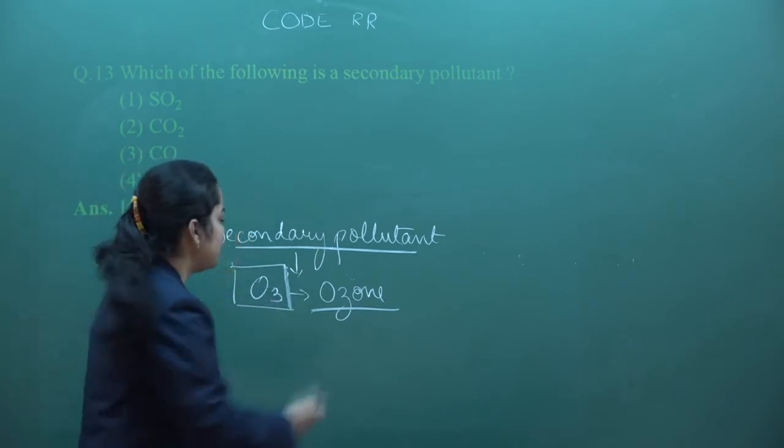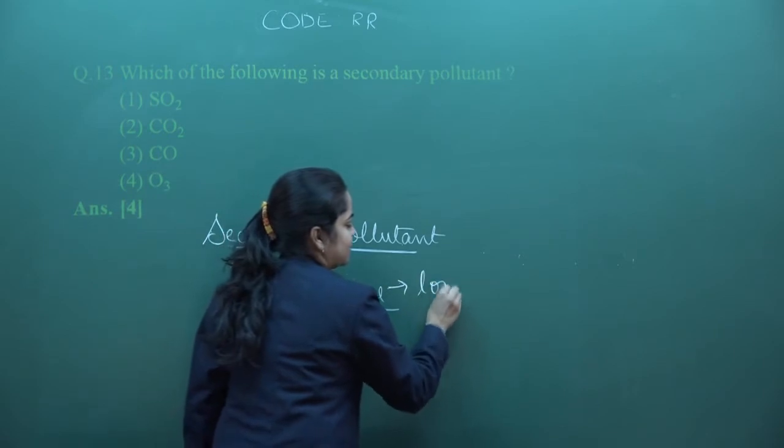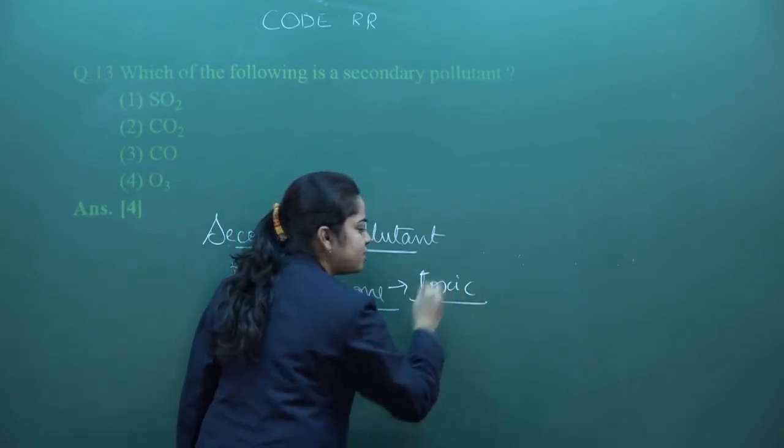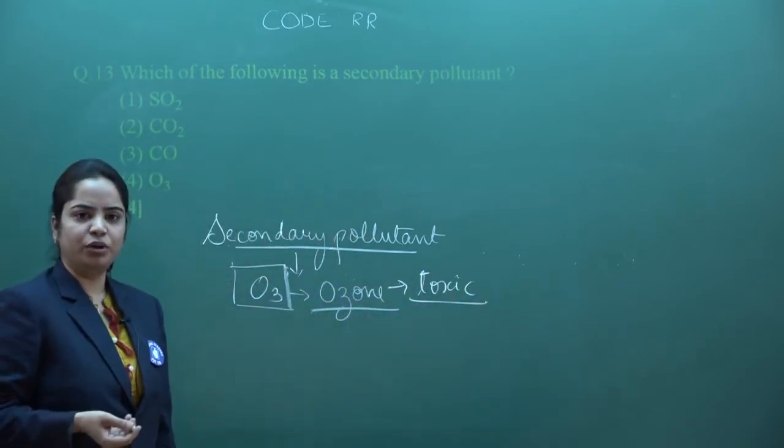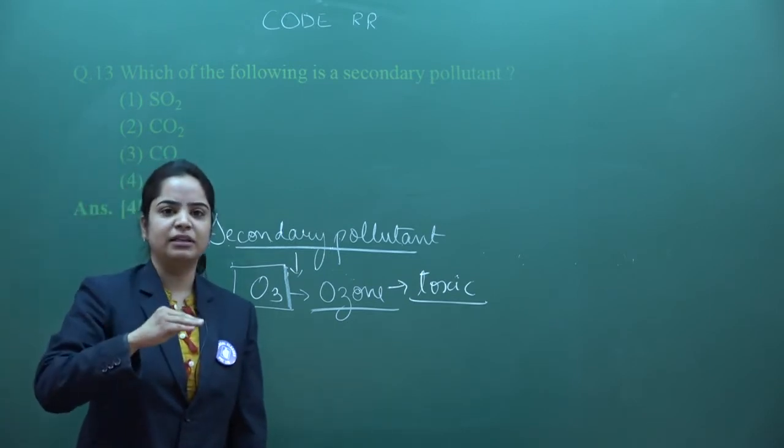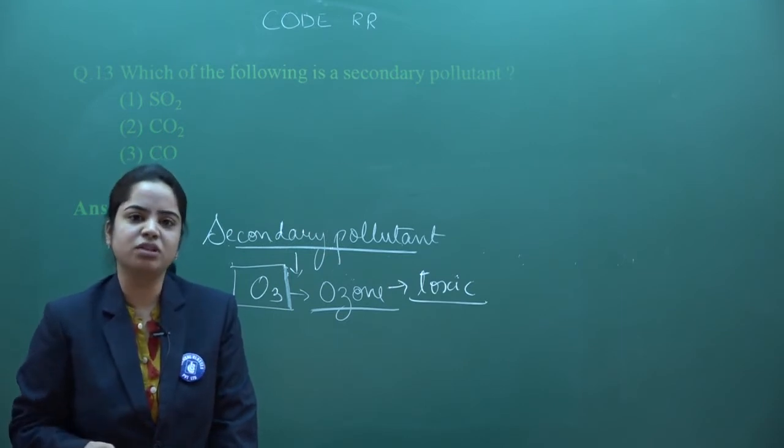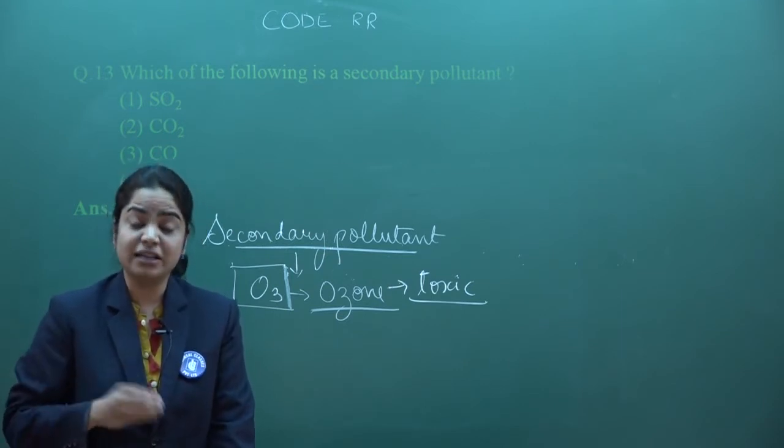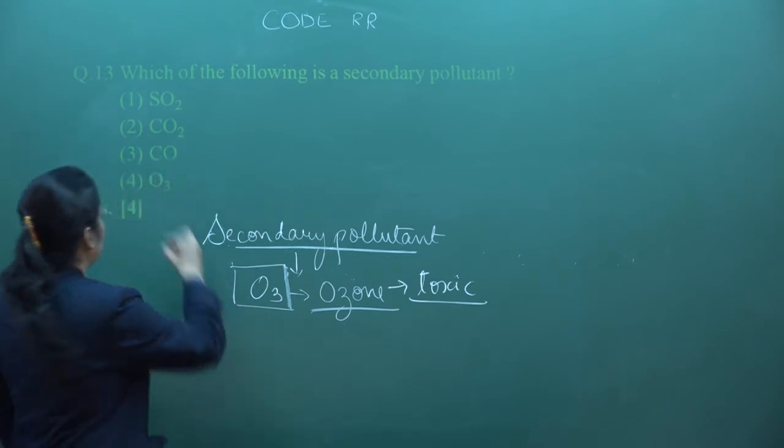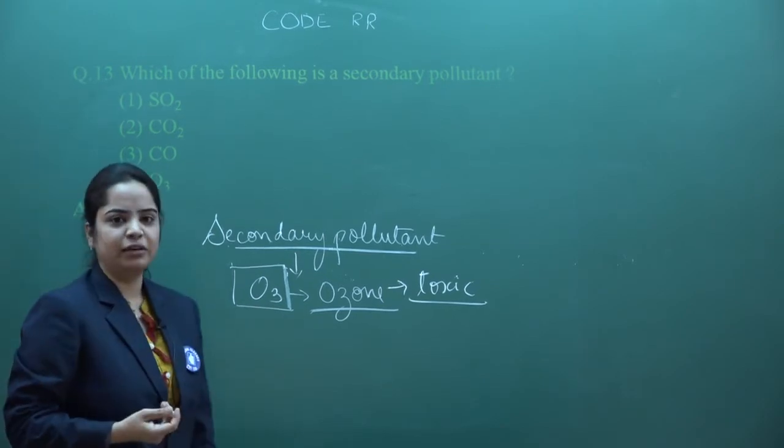But at present ozone is a toxic gas. The gas is toxic, so it's a secondary pollutant. In the stratosphere it works as a protective layer, but if ozone concentration increases at ground level, it will be toxic for us and is considered a pollutant. So the answer of the question will be fourth - O3 ozone.